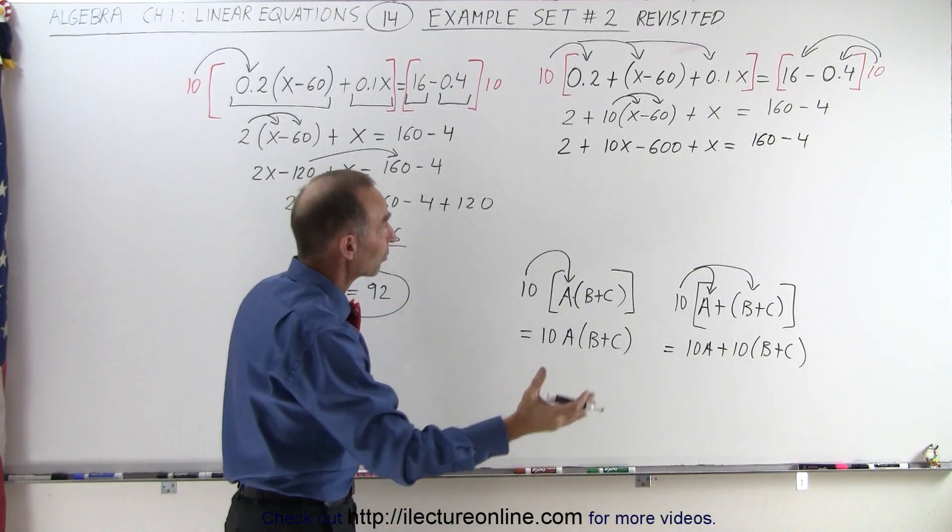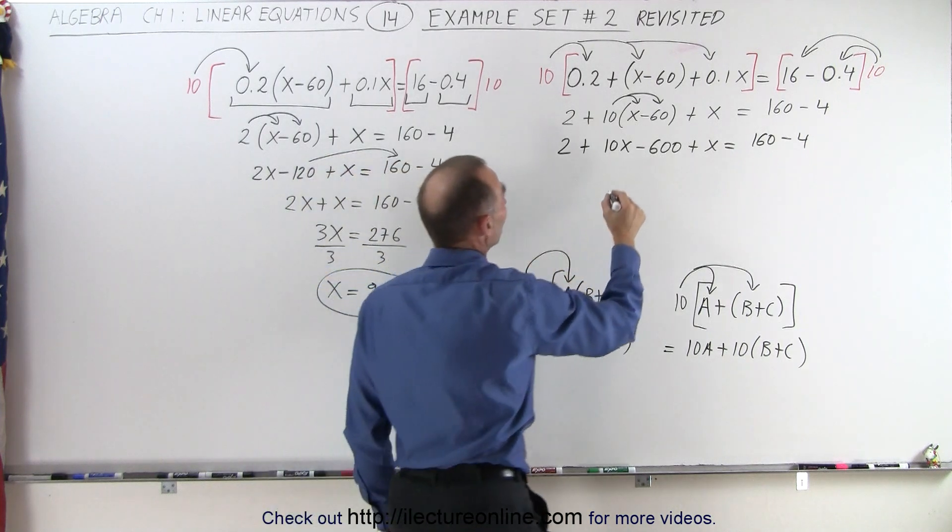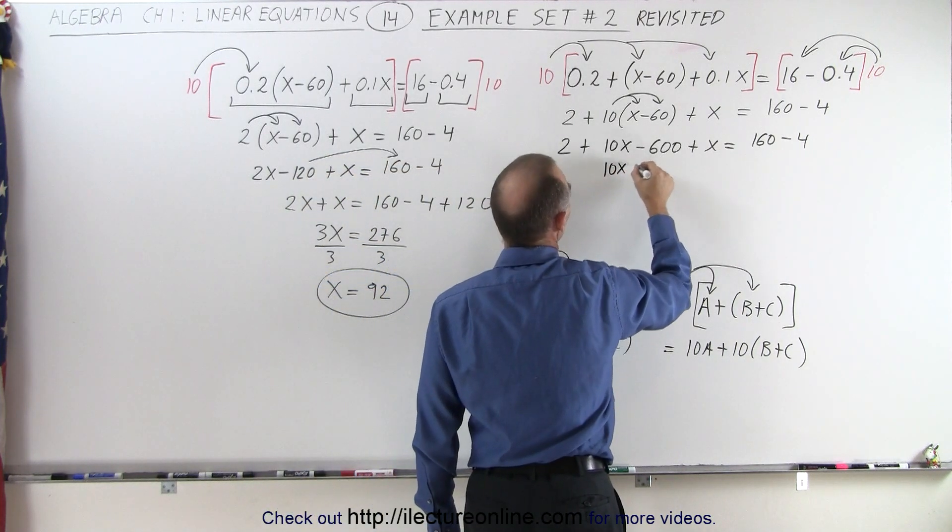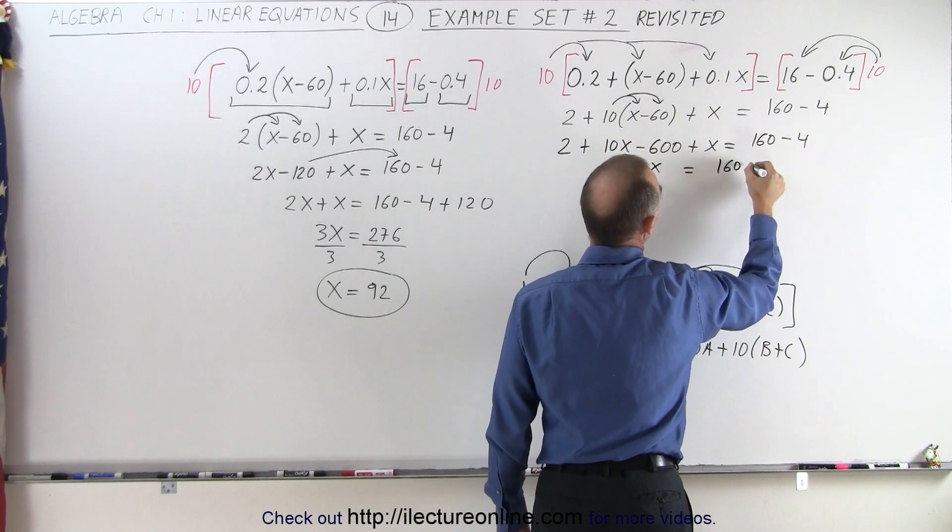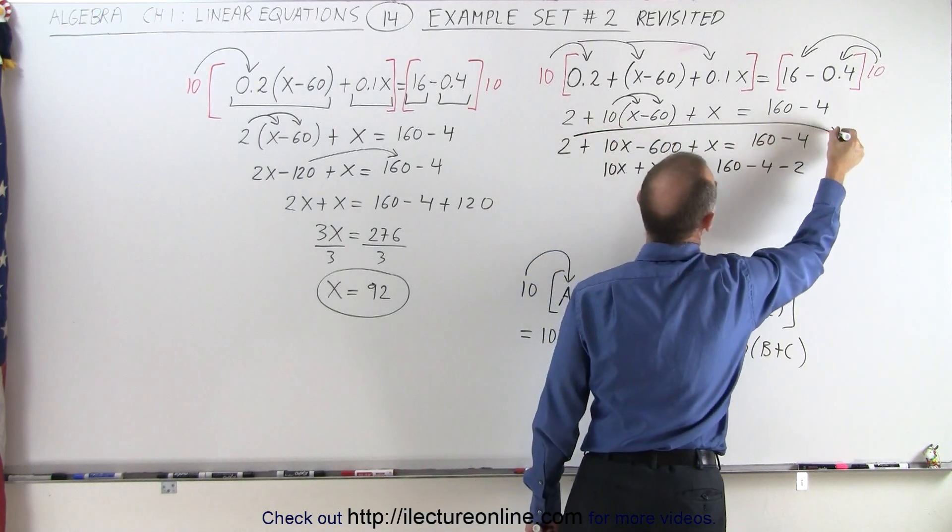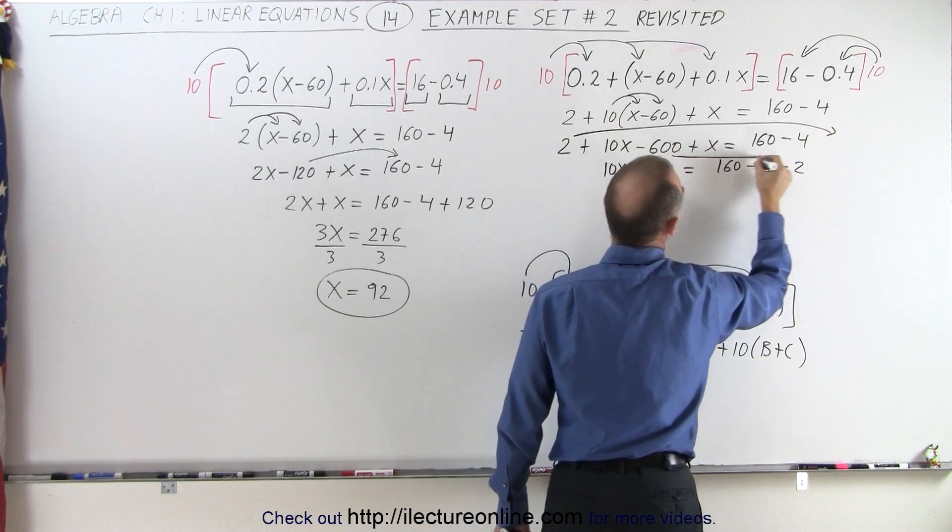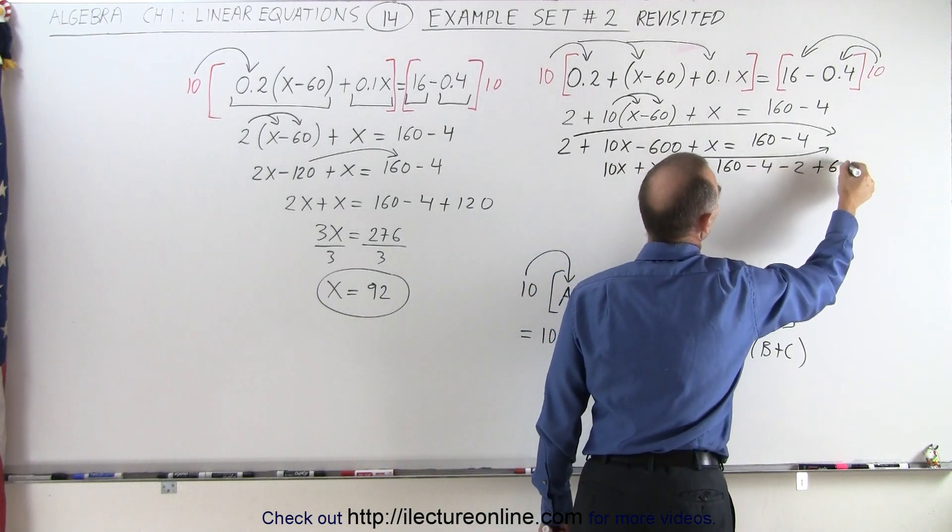Now we move all the terms of the x to one side. They're already on the left side. Everything else to the right side. So that gives us 10x plus x is equal to 160 minus 4 minus 2. When we bring the 2 over to the other side it becomes a negative 2 and we bring the negative 600 to the other side becomes a positive 600 so plus 600.